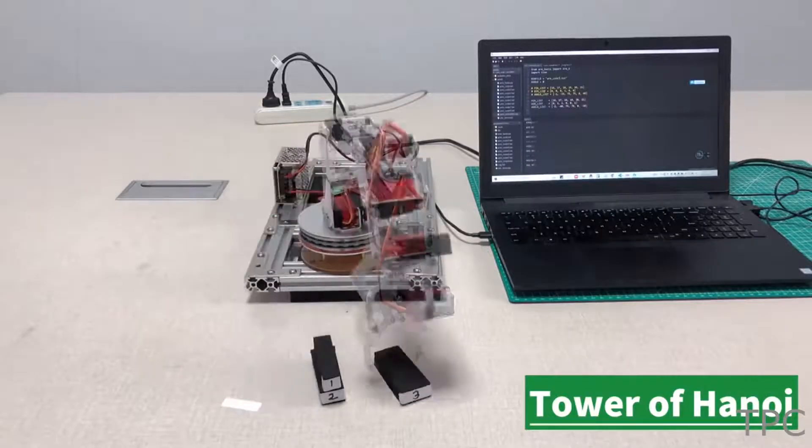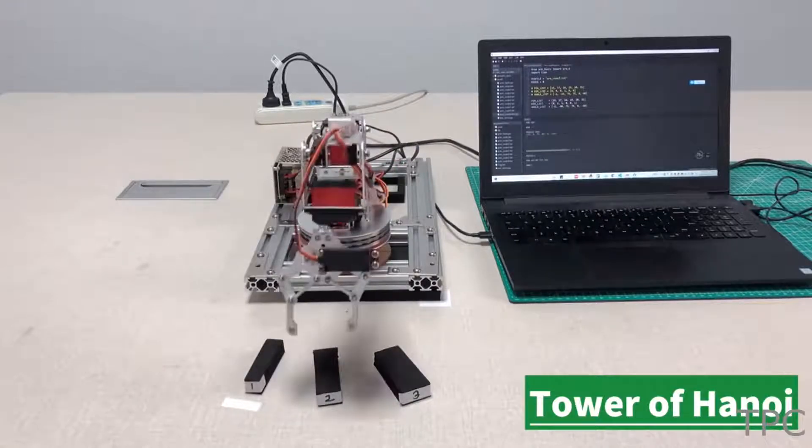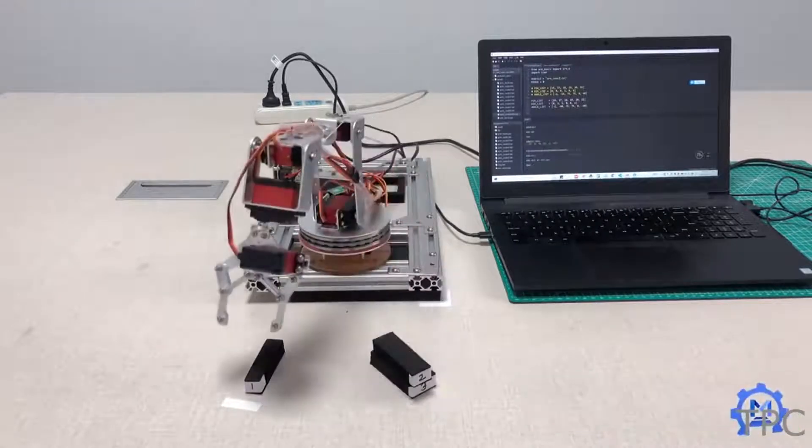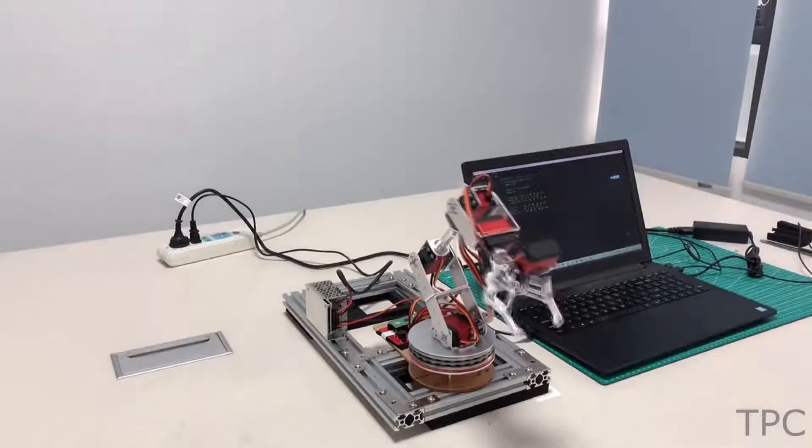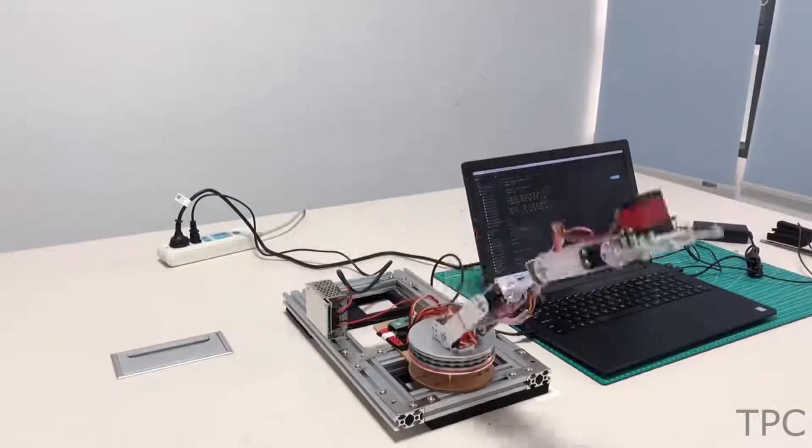The arm can easily sort blocks of different dimensions to make a standing tower. These are some really amazing movements by the robotic arm, what do you think?